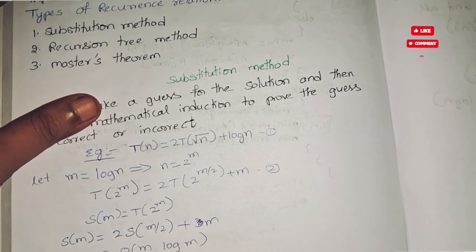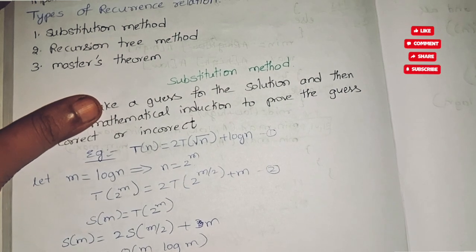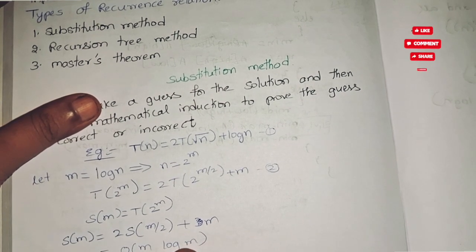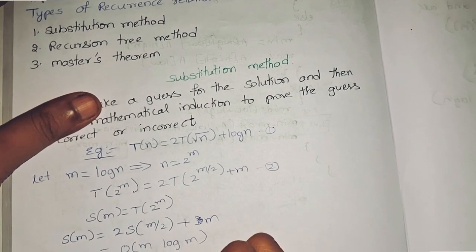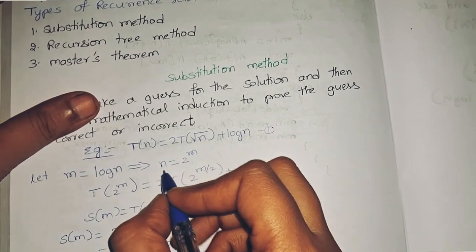Changing back from s(m) to T(n), we obtain: T(n) = T(2^m), so T(n) = T(2^m).